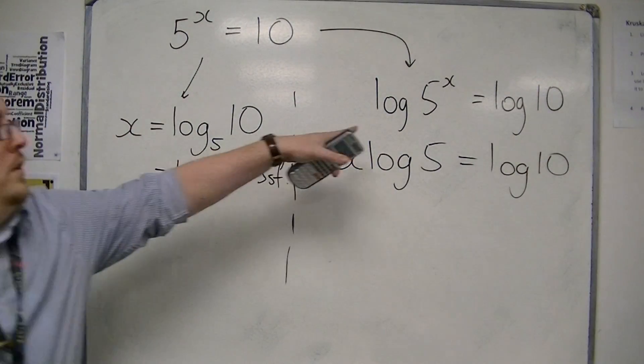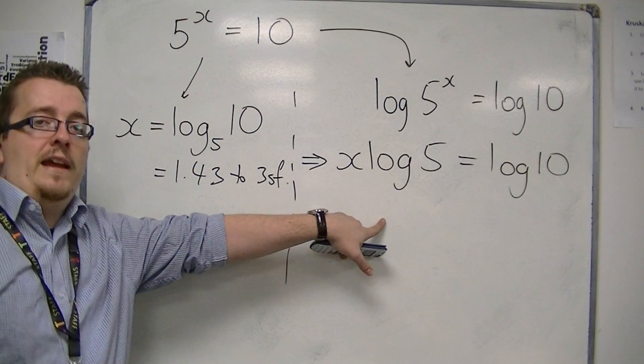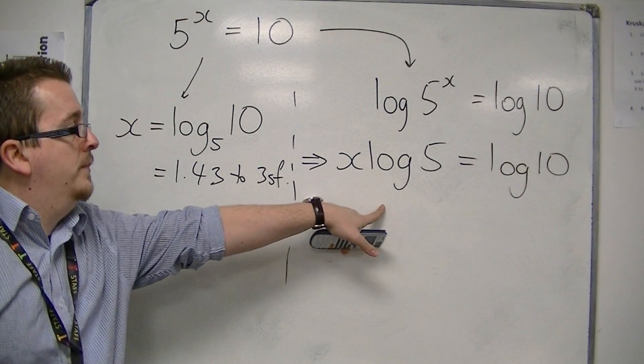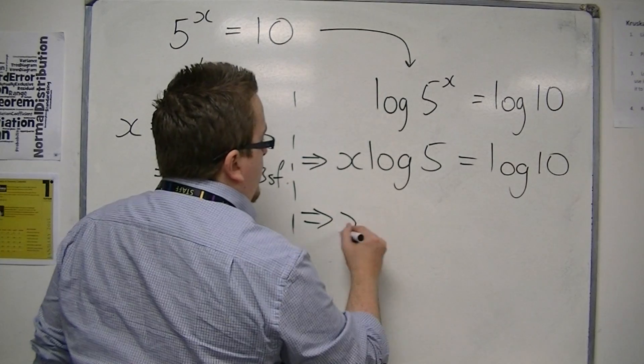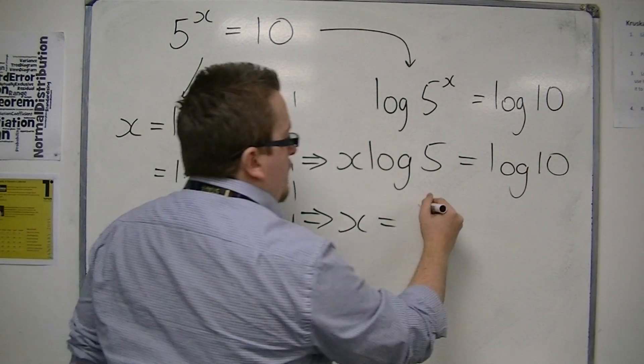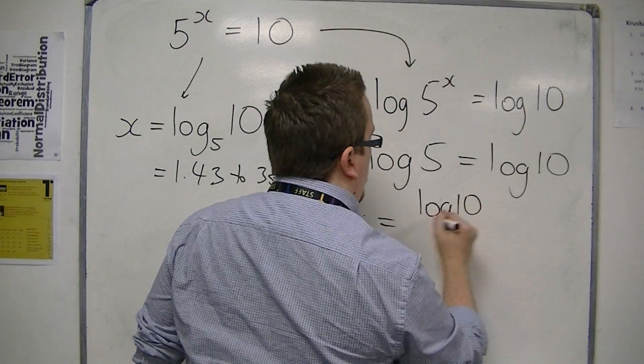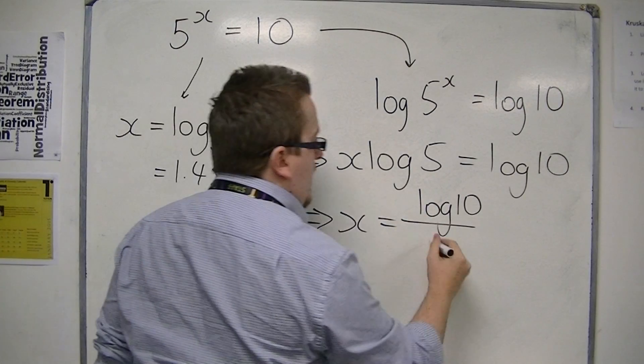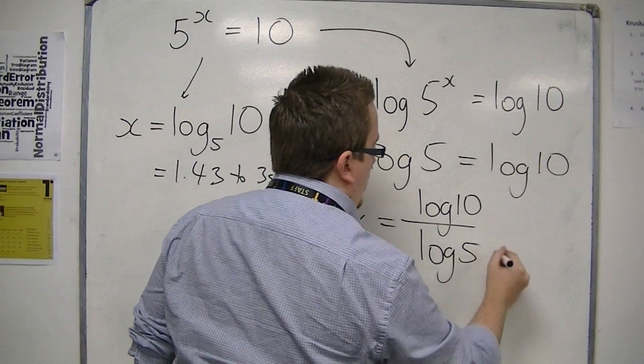OK, so log 5 to the x is the same as x log 5. And then I can divide both sides by that log 5. So I know that x is log 10 over log 5.